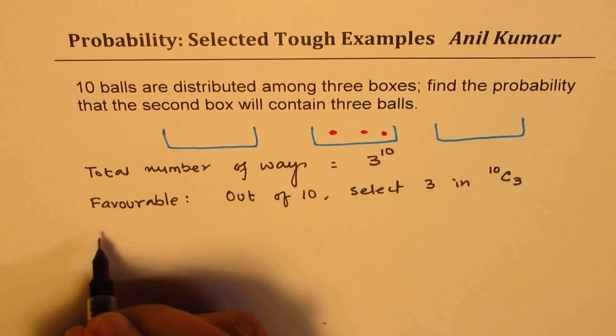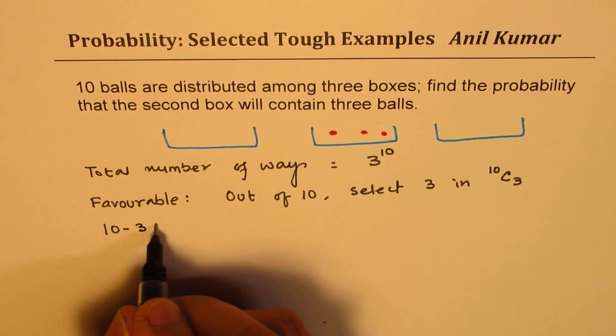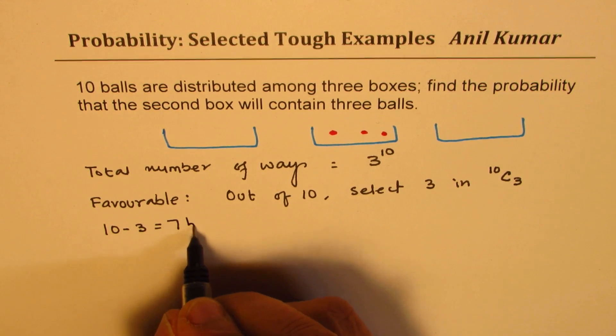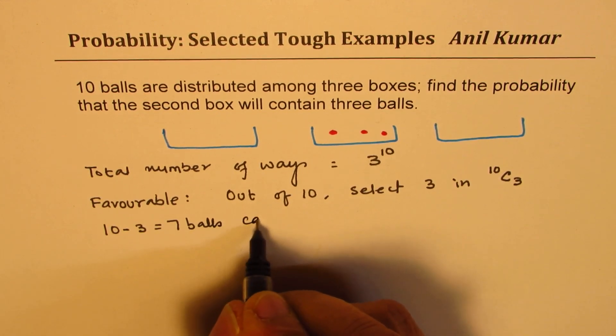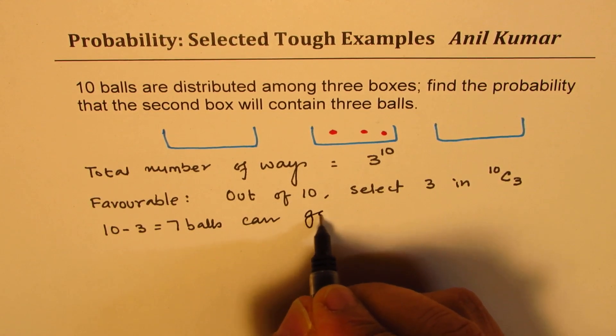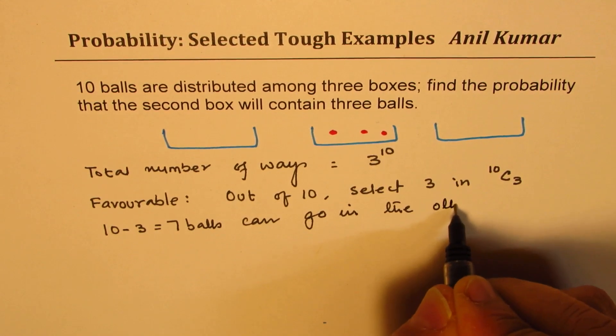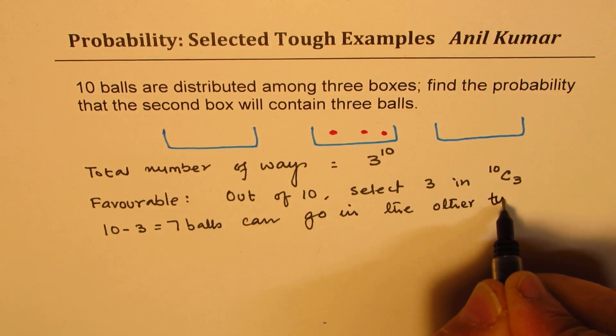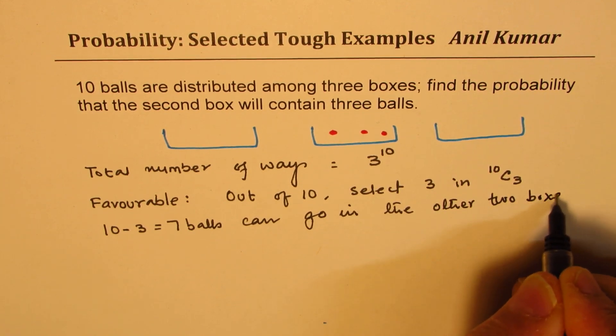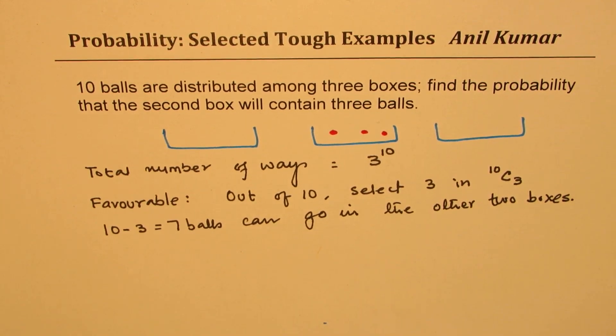Basically, now we have selected 3. That means 10 minus 3, which is 7. So, 7 balls can go in the other 2 boxes. How many ways are there for the 7 balls to go into the other 2 boxes?